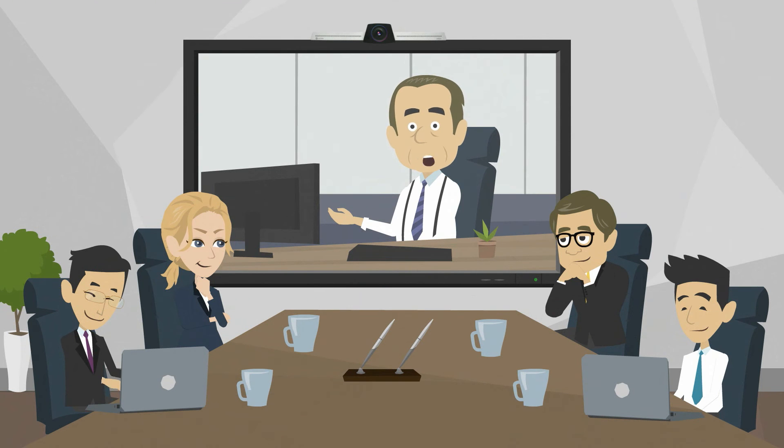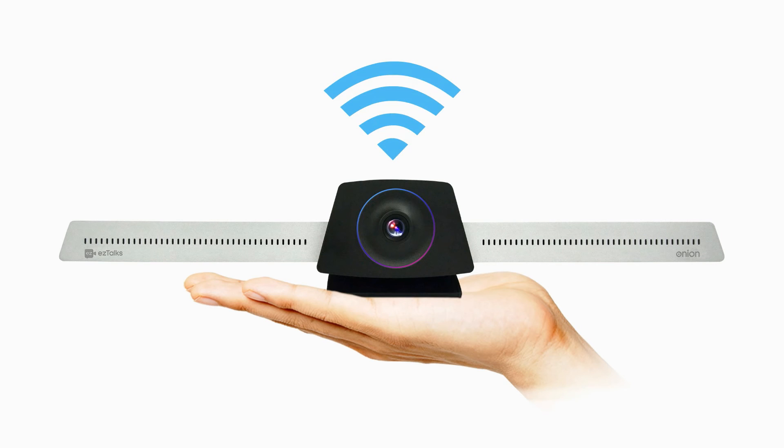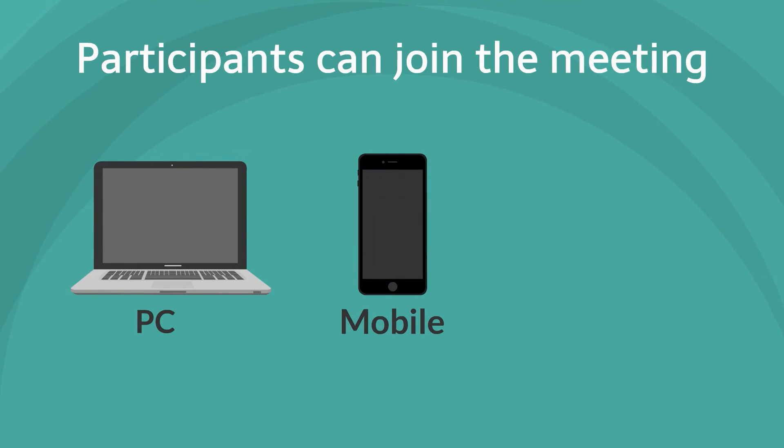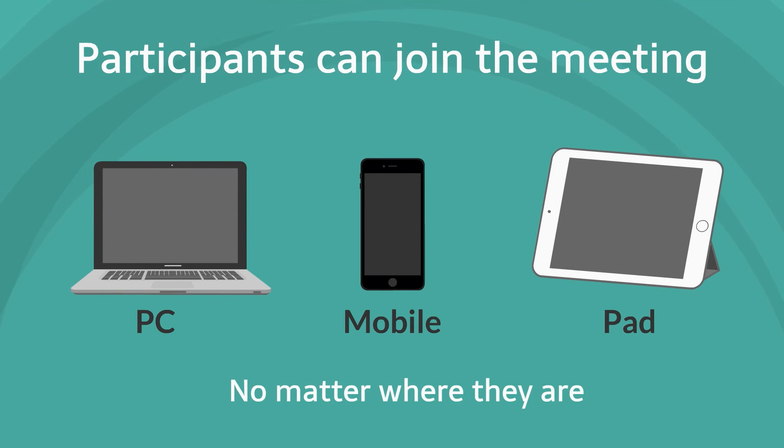With built-in wireless connection, Onion turns any room to a video conference room in minutes. Participants can join the meeting from PC, mobile, and pad, no matter where they are.